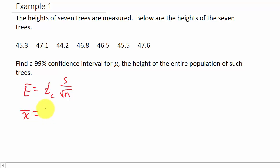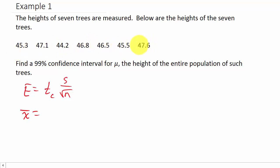Let's find X-bar first. We add all seven measurements up and divide by 7, which gives us 46.14.